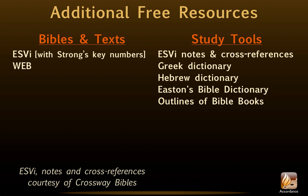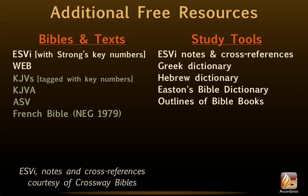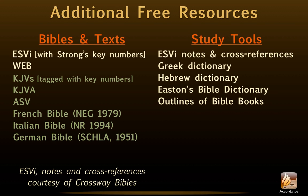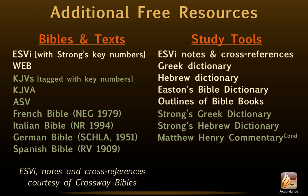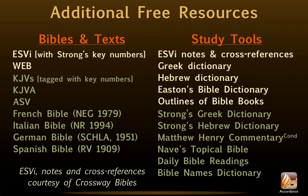Once we register — covered in podcast number 55 — we can access additional free resources. These include six more Bibles: the KJV tagged with Strong's numbers and its Apocrypha, the ASV, a French Bible, an Italian Bible, a German Bible, and a Spanish Bible. In addition to that, we also have access to additional Bible study resources like Strong's Greek Dictionary, Strong's Hebrew Dictionary, Matthew Henry Commentary (the Condensed Version), Nave's Topical Bible, the Daily Bible Readings, and the Bible Names Dictionary.